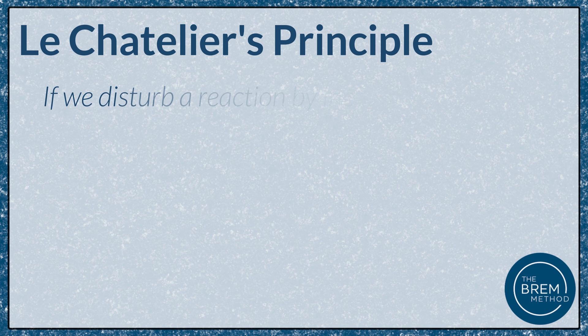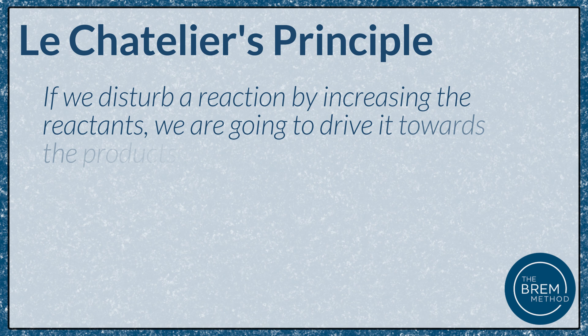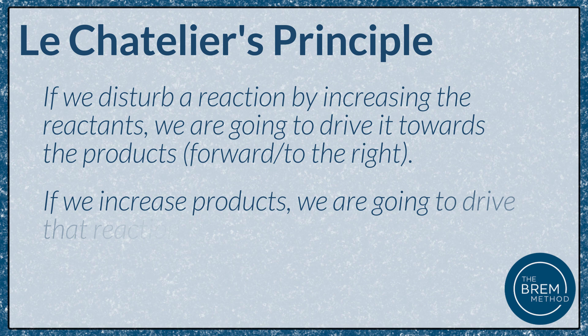The common ion effect is a derivative of the thermodynamic Le Chatelier's principle, which states that if we disturb a reaction by increasing the reactants, we're going to drive it towards the products, or forward or to the right. If we increase products, we're going to drive that reaction back to the left, or to the reactants. We'll see how Le Chatelier's principle comes into play with the common ion effect, both forwards and backwards in these reactions. Overall though, I want you to remember that Le Chatelier is all about re-establishing equilibrium, kind of like a seesaw that's always trying to find that balance point.